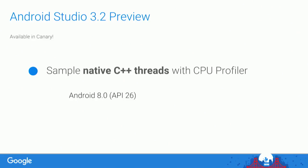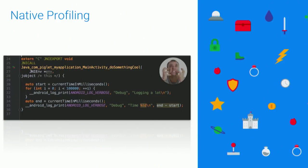As I mentioned, we can sample native C++ threads. The only limitation is it works on API 26, just Android 8 — not a big deal. I was writing some code and I left some debugging log in an inner loop. Raise your hand if you have never left debugging code in your inner loop. I don't believe you. Well, that means that when I click on the button, things got a little bit slow.